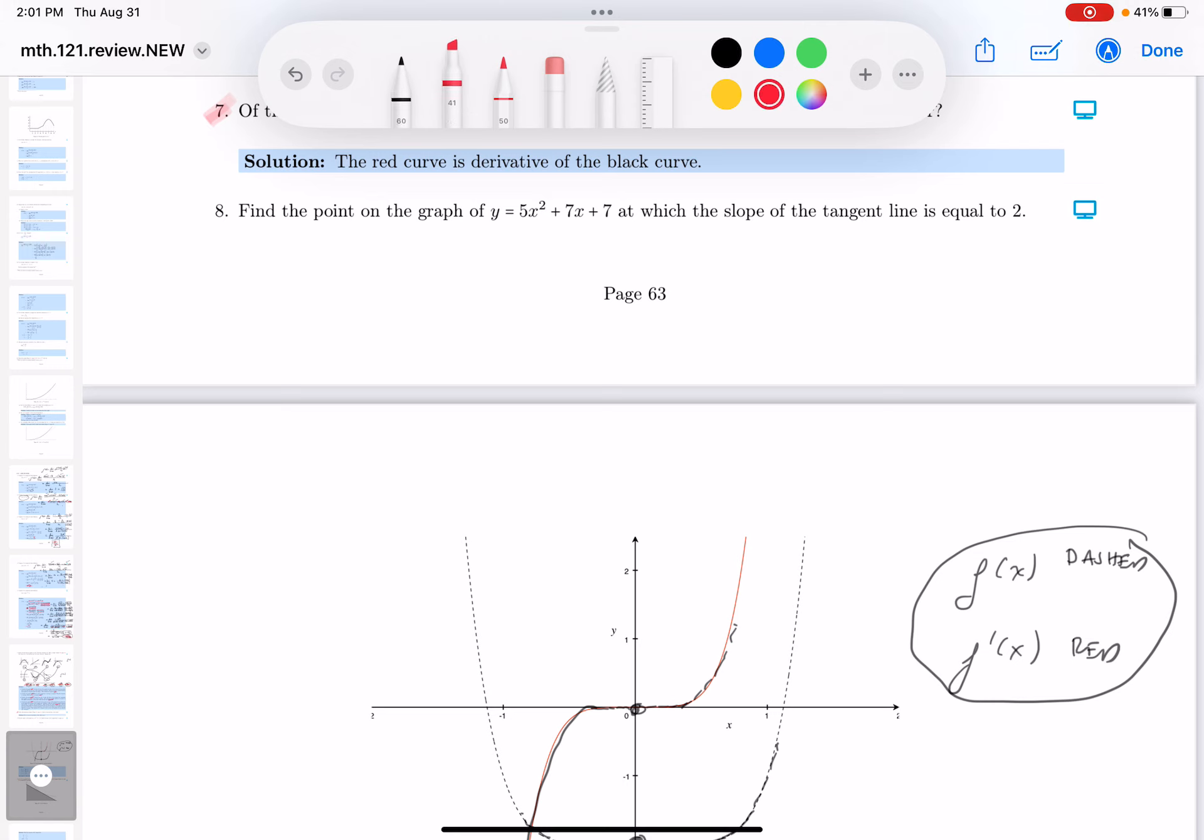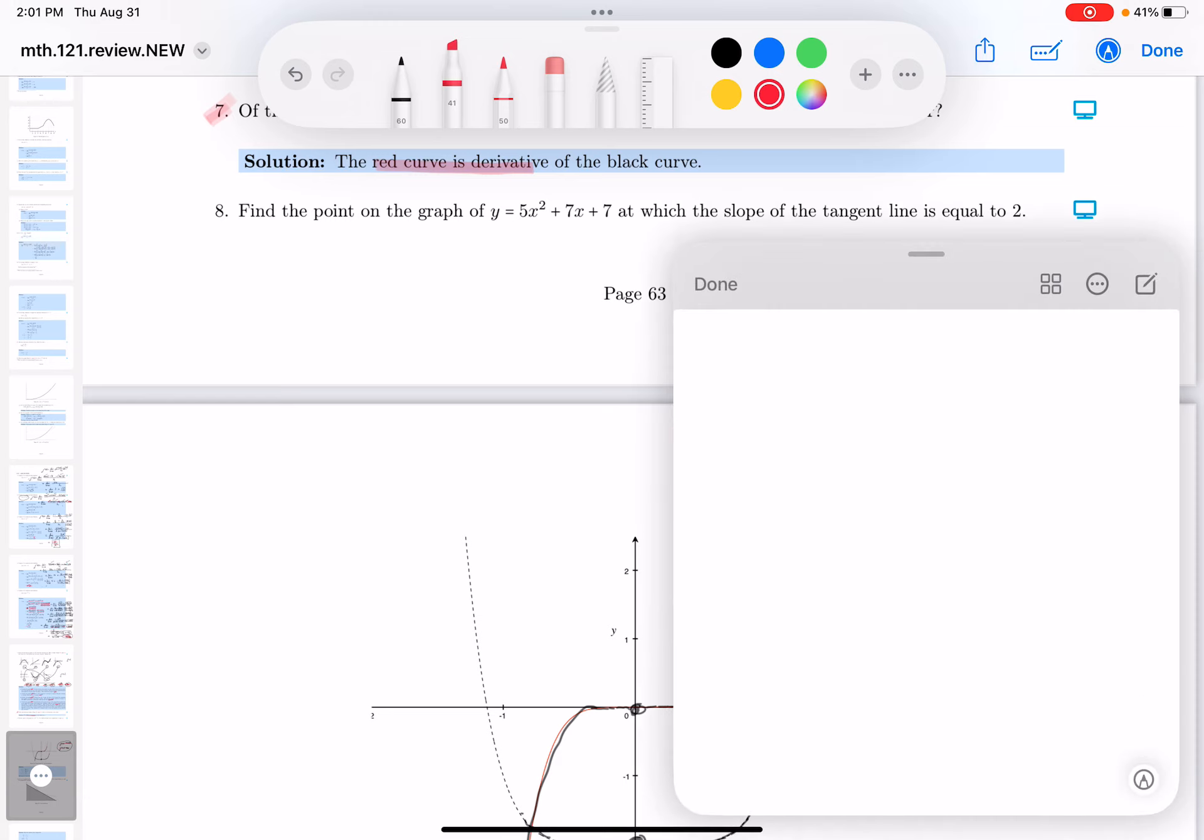So let's take a look at the key where it says the red curve is a derivative. That's what I said over here. And the black curve, it really should say the dash curve is the function. So the red curve is the black curve. I call it the dash, but it is black in appearance as well. All right? Thank you.